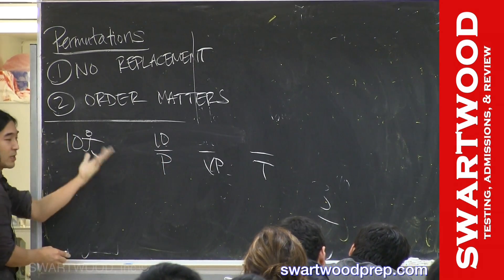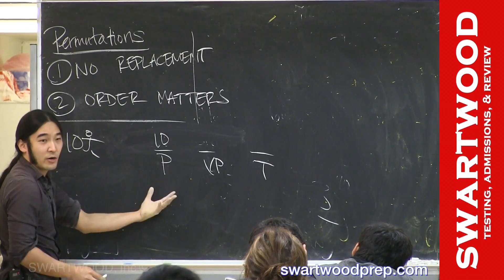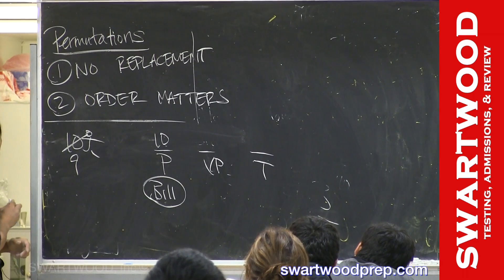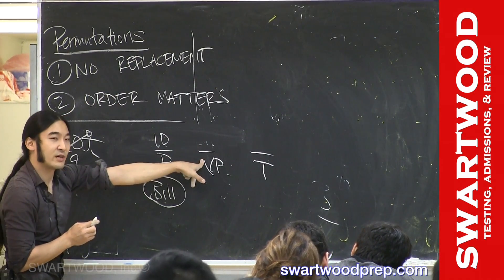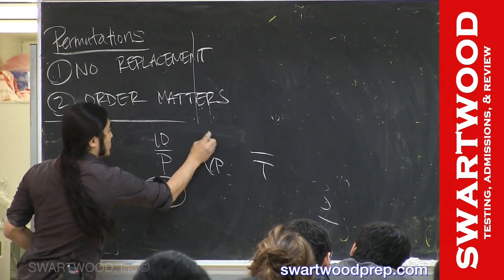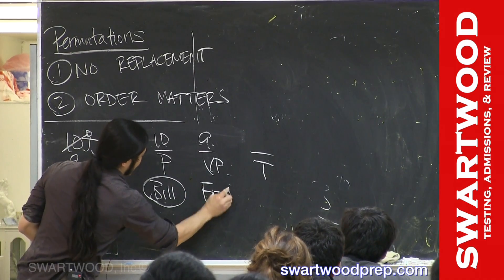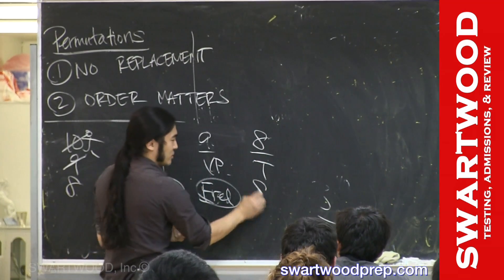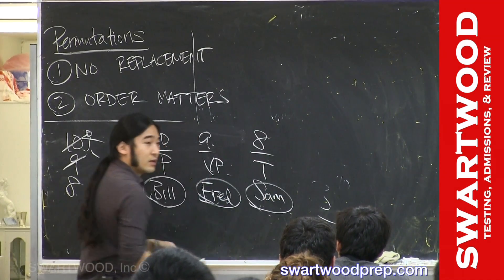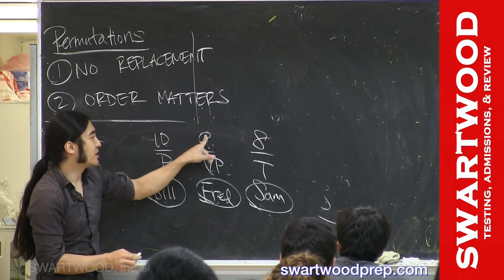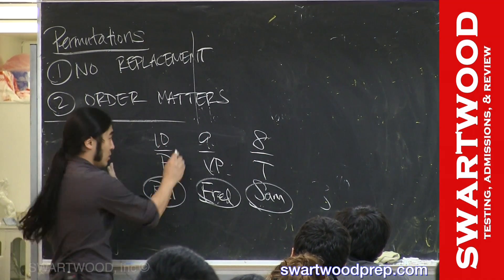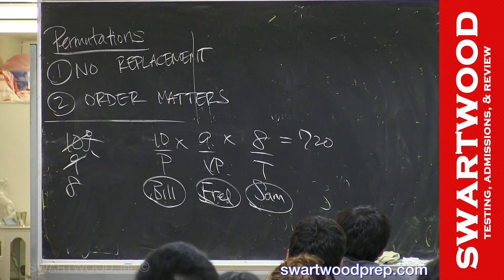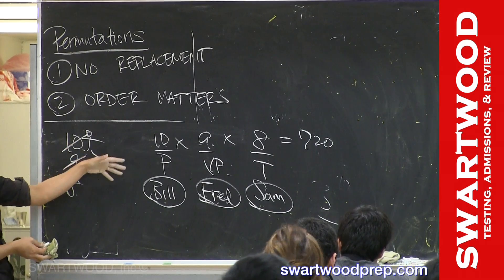How many choices do you have for president? Ten — no stress. Let's say I pick Bill. He's no longer in the running because you can't repeat. How many choices for vice president? Nine. Let's say that's Fred — he's out. How many choices for treasurer? Let's call them Sam. Back to the old rule: when you're in the middle of making choices before you get the final outcome, you multiply. So the answer is 10 × 9 × 8.